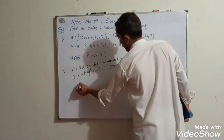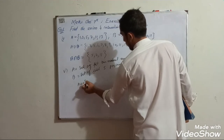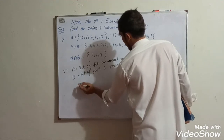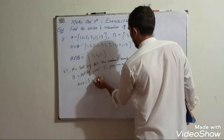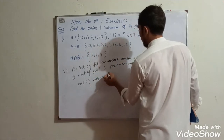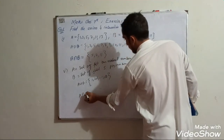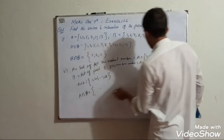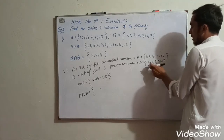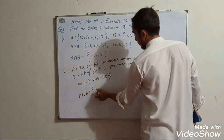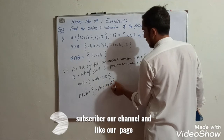A union B is {1, 2, 3, ...} — the natural numbers. A intersection B contains only the even numbers: {2, 4, 6, 8, 10, ...}.